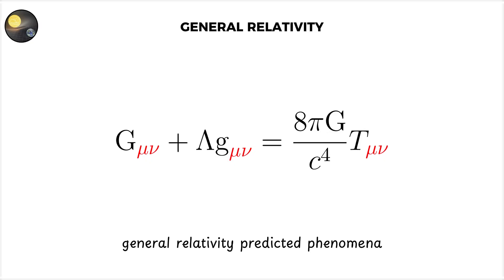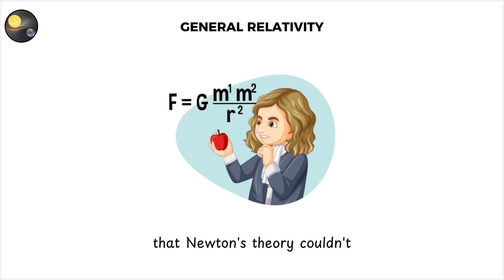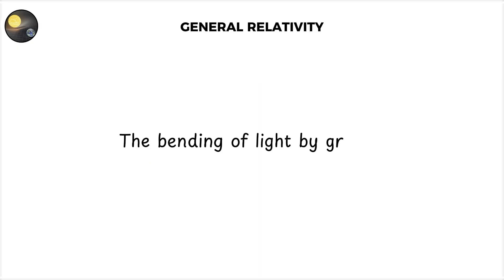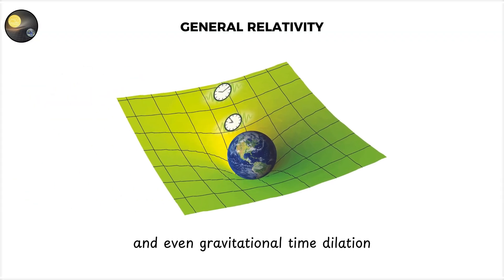General relativity predicted phenomena that Newton's theory couldn't. The bending of light by gravity, the precise orbit of Mercury, and even gravitational time dilation.